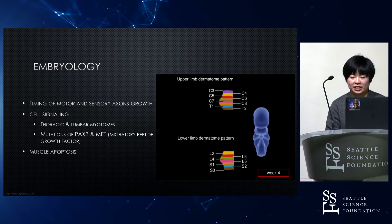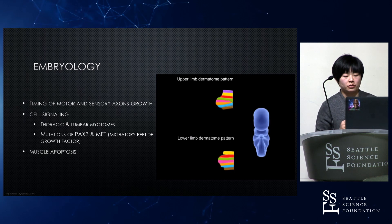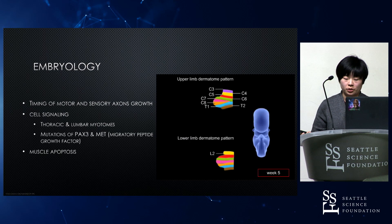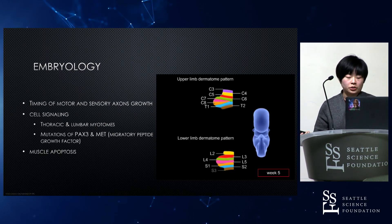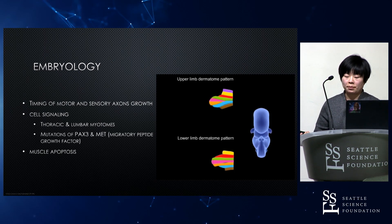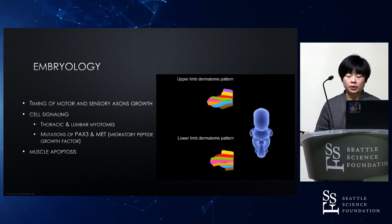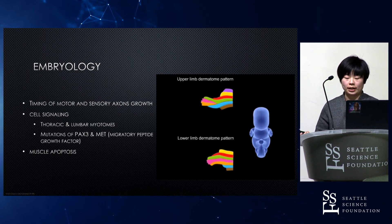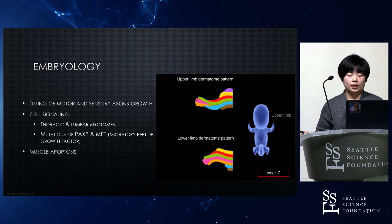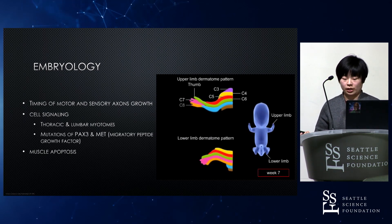There are many possible explanations of the variation described here. For example, variation in the timing of motor and sensory axon growth, cell signaling, and muscle apoptosis could all play a role. During week 4 of fertilization, spinal nerves extend out to myotomes and develop associations with them. At week 5, myotomes separate into two divisions — epimeres and hypomeres — and hypomeres extend into elongating limbs. During this elongation, muscle brings the associated nerve from the torso into the limb buds.